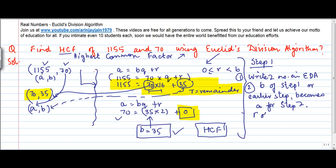And r of earlier step equals b for next step. Step 3 - When r becomes zero, value of b is the HCF. So once r becomes zero, whatever is the value of b in that equation, that is the Highest Common Factor of any two numbers.